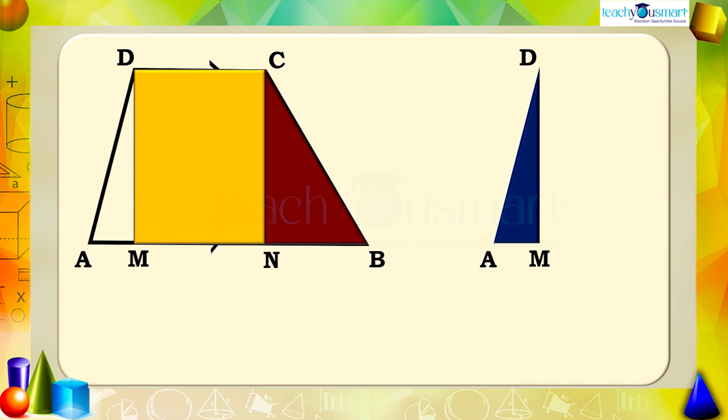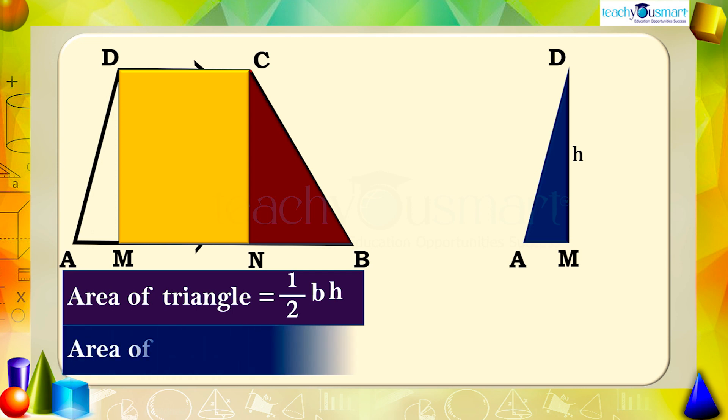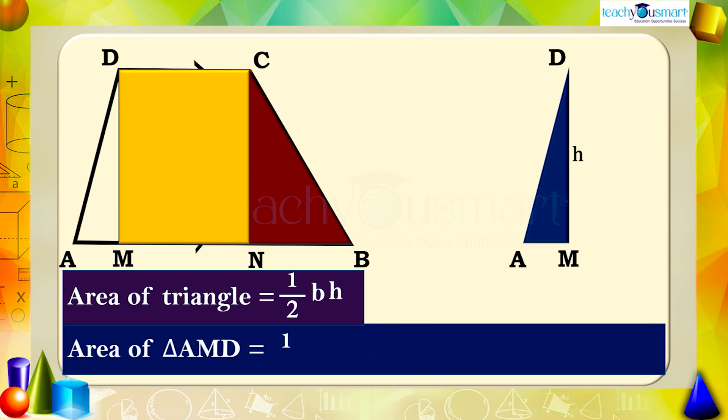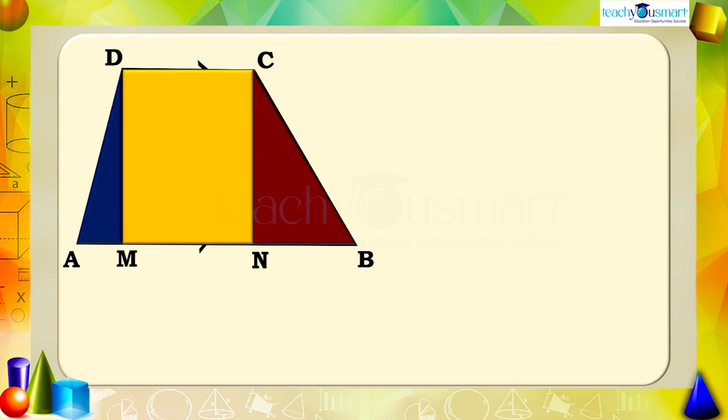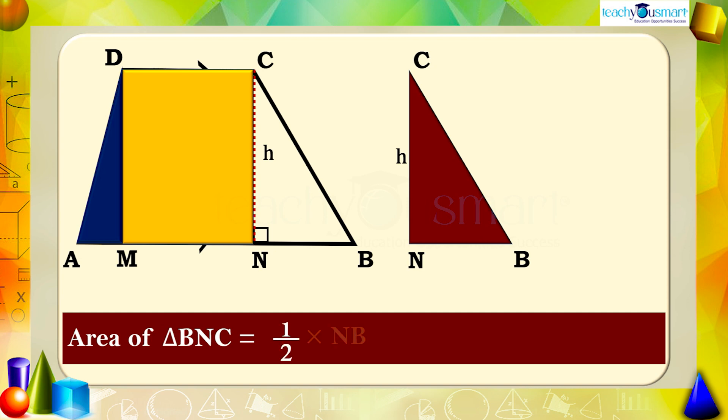We know that the area of a triangle with base b and height h is half bh. Therefore, the area of triangle AMD equals half multiplied by AM multiplied by DM equals half multiplied by AM multiplied by h. Similarly, area of triangle BNC equals half multiplied by NB multiplied by CN equals half multiplied by NB multiplied by h.